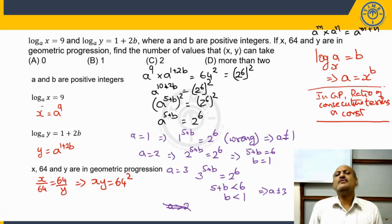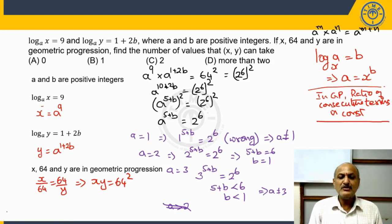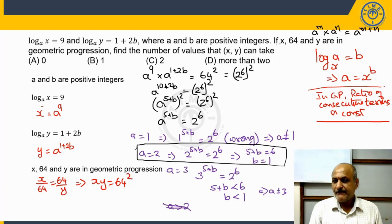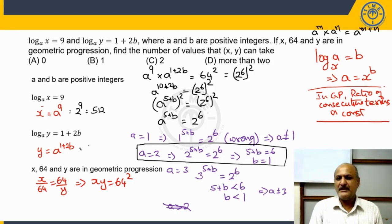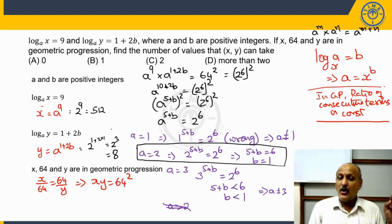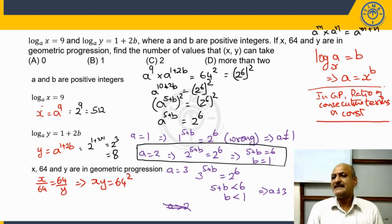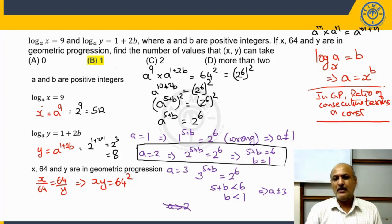So the only allowed values are a equals 2 and b equals 1. Now let us find x and y. x equals 2 raised to the power of 9, which is 512. y equals a raised to the power of (1 plus 2b) equals 2 raised to the power of (1 plus 2·1) equals 2 cubed, which is 8. So there is only one pair: x equals 512 and y equals 8 — that is the only set of values satisfying the given condition.